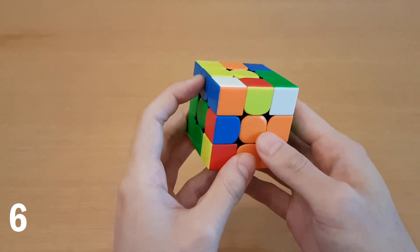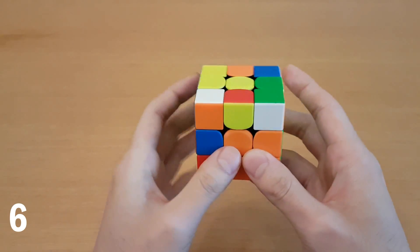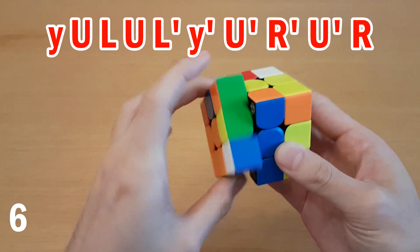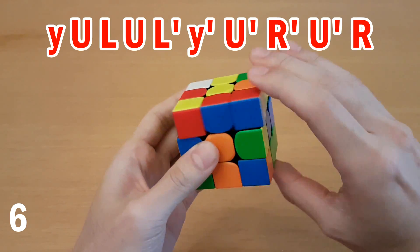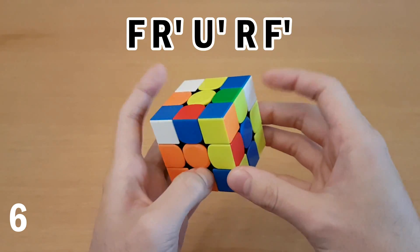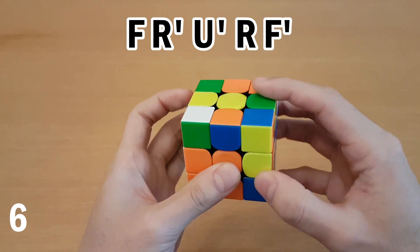Lastly for this F2L case, where the corner's over here and the edge's over here and flipped, I see a lot of people would actually do this and rotate, and then rotate again. Instead from here, F just sets them up, and you can insert, and then F'.